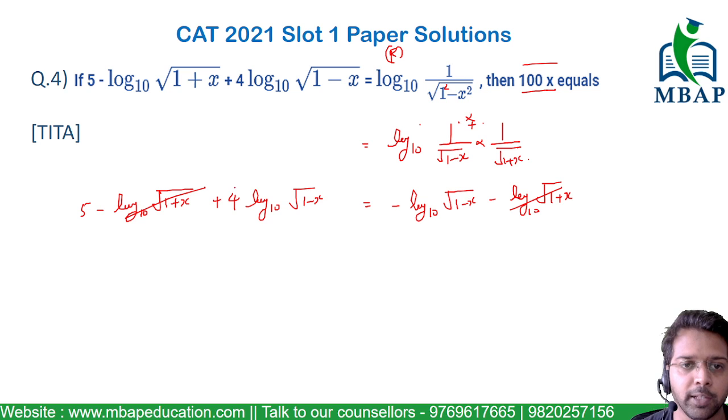Taking 4 times log₁₀√(1-x) to this side, it becomes: 5 = -5log₁₀√(1-x).